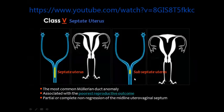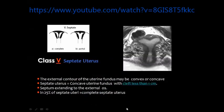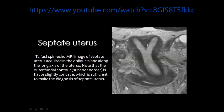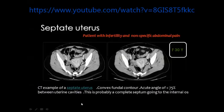Septate uterus means the configuration of the uterus is almost normal but there is a septum within the cavity. The septum may be complete or incomplete — the latter is called subseptate uterus. This type of uterine anomaly has the poorest reproductive outcome according to the literature. Here you see a cleft less than 1 cm from the uterine fundus — this is subseptate uterus with a cleft dividing the cavity into two parts that fuse into a single cervical canal.